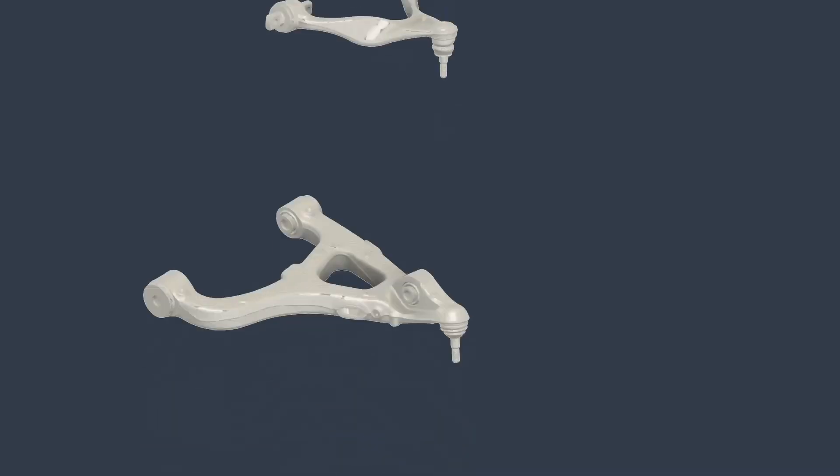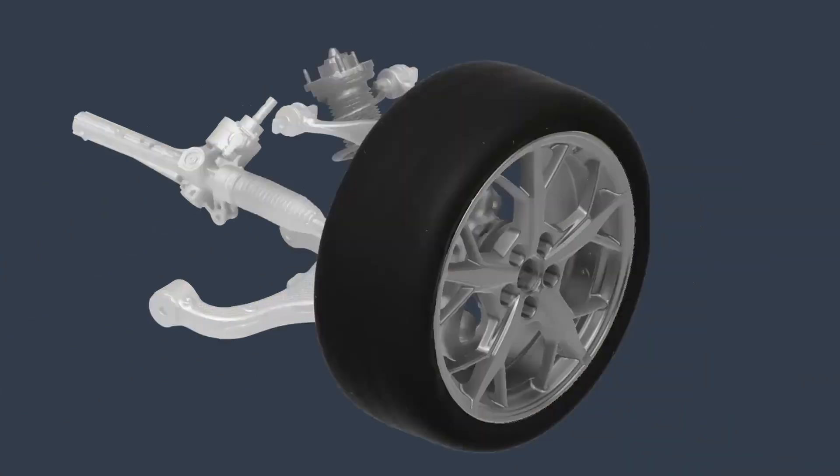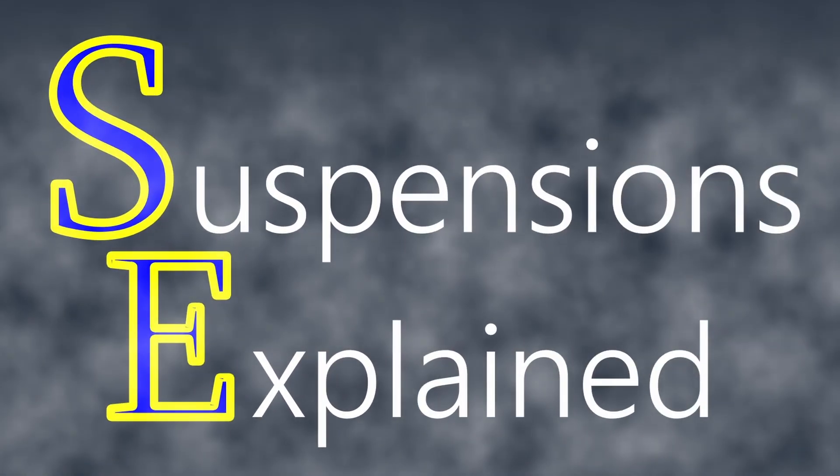Designing a successful vehicle suspension system so the vehicle does what we want it to do is all about controlling the motion of the knuckle. Hello everyone, I'm Huibert Mees and this is Suspensions Explained. Controlling the motion of the wheel in a car so that it moves predictably over bumps and through potholes and around corners is the object we're trying to achieve when we design a suspension system.